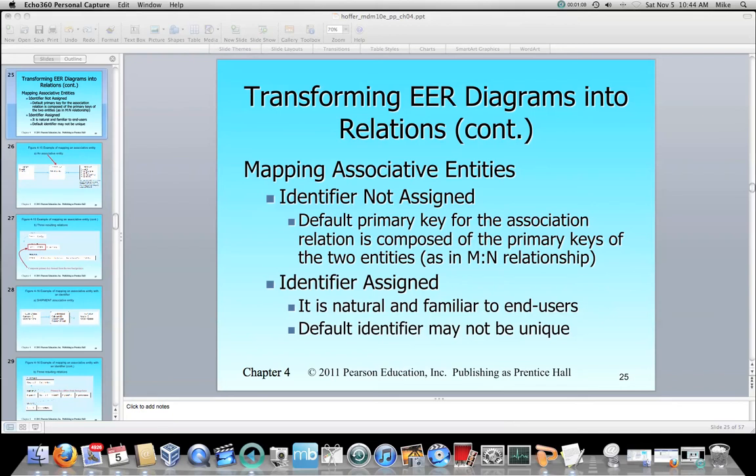So here we've got if the identifier is not assigned, then we're going to be using a primary key for the association relation. And that primary key is going to be the foreign keys taken from the two parent entities in the many-to-many relationship.